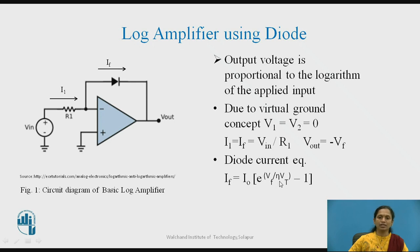The diode current equation is: If equal to I0 times exponential of Vf by eta·Vt minus 1, where I0 is the leakage current, Vf is the forward voltage across the diode, eta is the ideality factor which depends on the material used — silicon or germanium — and Vt is the temperature equivalent voltage, that is k·T, where T is in degrees Kelvin, approximately equal to 26 millivolts.